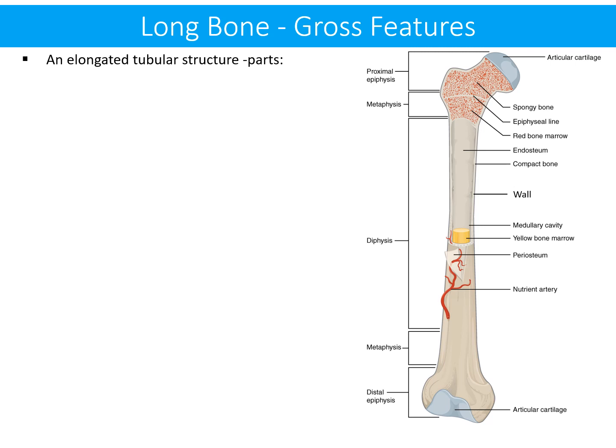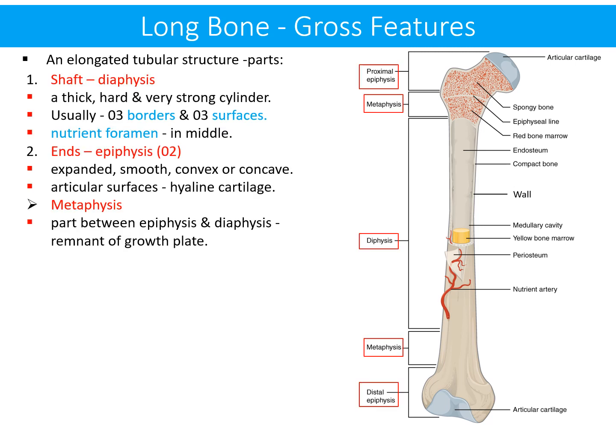Long bones are elongated tubular structures with the following parts. Number one is the shaft, also named the diaphysis, a thick, hard and very strong cylindrical structure with usually three borders and three surfaces; one surface has a nutrient foramen in the middle. The second part is the ends of the bone — the epiphysis — which are expanded, smooth, convex or concave articular surfaces covered with hyaline cartilage.